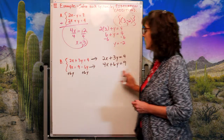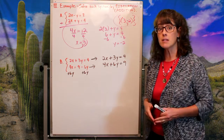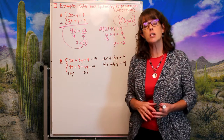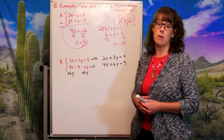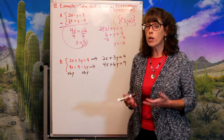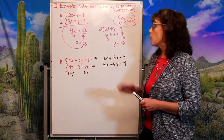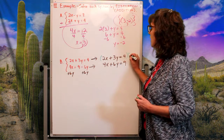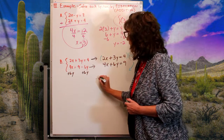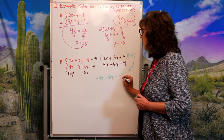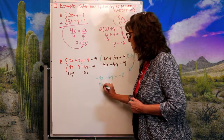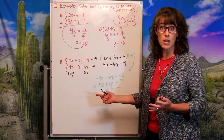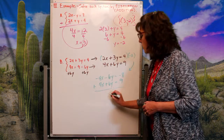But if I add them as-is, I get 6x and 9y — nothing is eliminated. So I need to multiply one equation by a factor that creates opposite coefficients. I'll multiply the top equation by negative 2, giving me −4x − 6y = −8. Now: negative 4x plus 4x cancels to zero, and negative 6y plus 6y cancels to zero — both sets of variables are eliminated when I add.